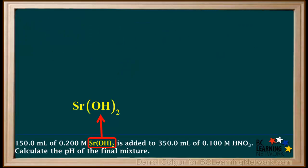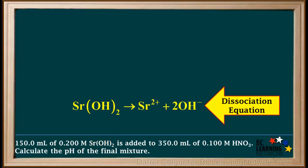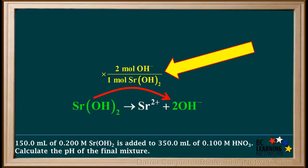Strontium hydroxide is a strong base, and its formula Sr(OH)₂ has two OHs in it. So when we write the balanced dissociation equation for Sr(OH)₂, we see that there are two moles of OH⁻ for each mole of Sr(OH)₂. We can use this as a conversion factor.